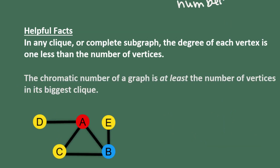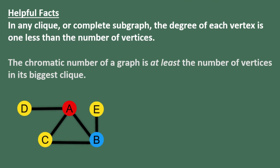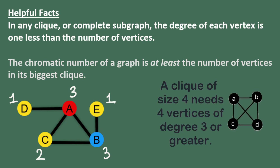There are some other helpful facts you should know to work these types of problems. First, in any clique or complete subgraph, the degree of each vertex is one less than the number of vertices, and the chromatic number of a graph is at least the number of vertices in its biggest clique. When identifying cliques, it's helpful to first identify the degrees of all the vertices in the graph. For example, in this graph, vertex D has degree one, vertex A has degree three, E has degree one, B has degree three, and C has degree two.